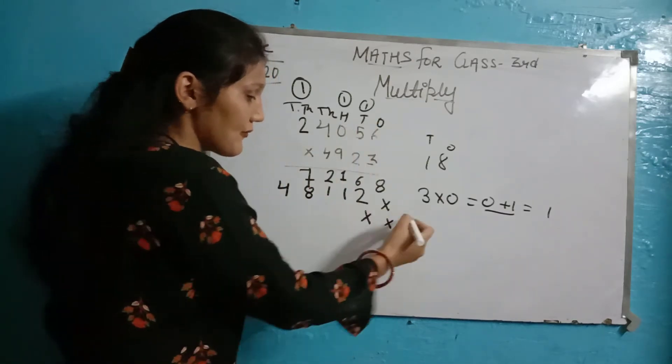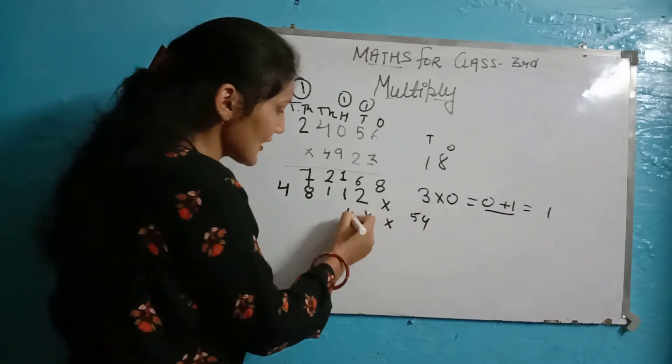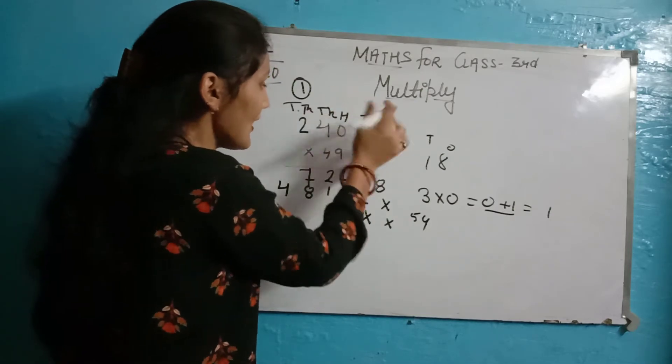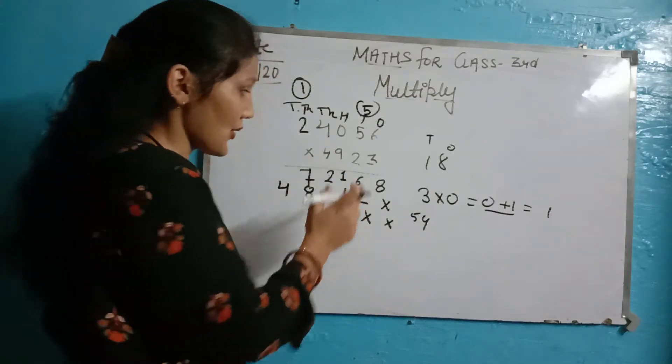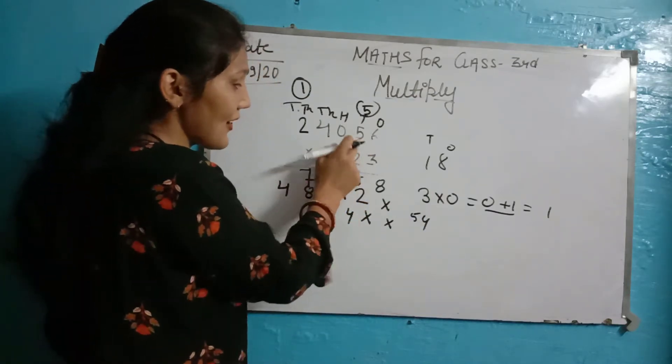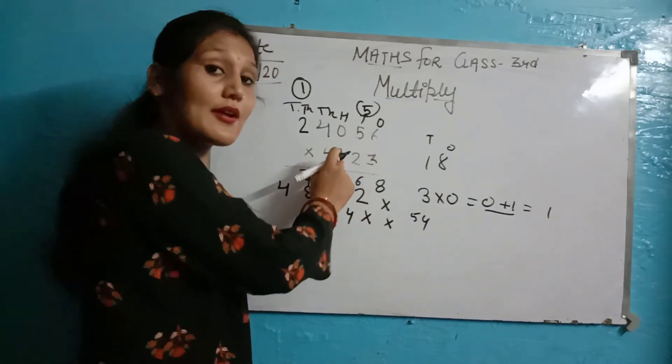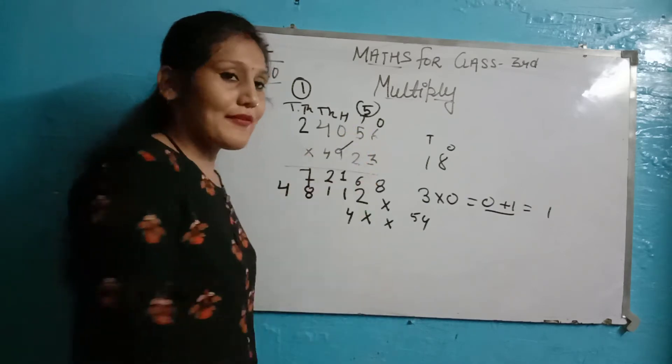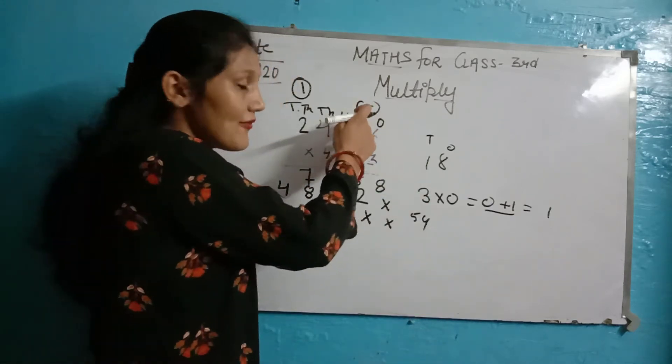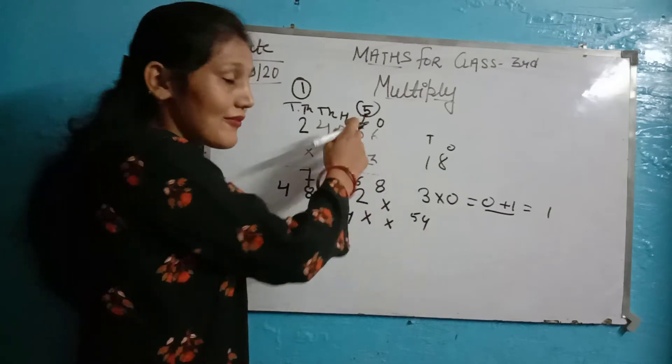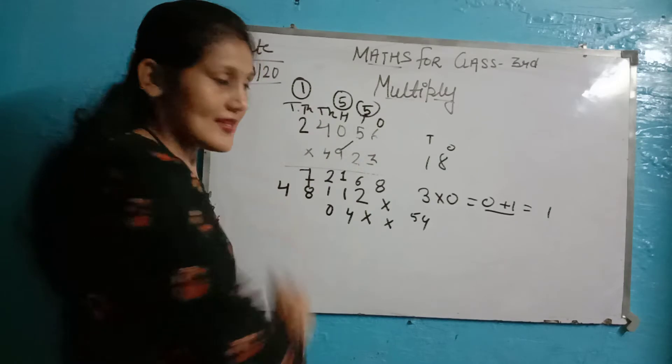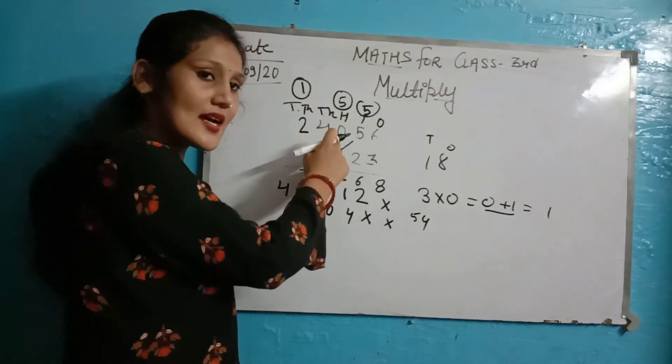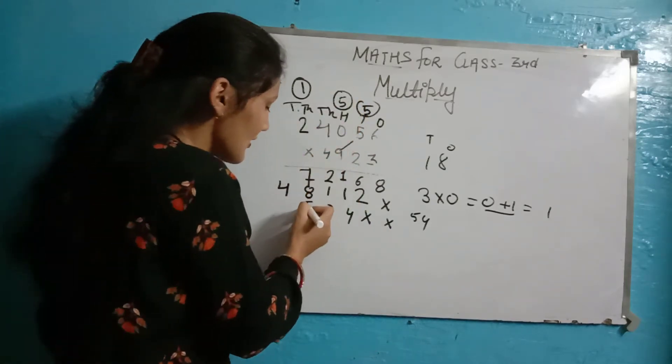We have 9 in hundreds place. Nine times six equals 54. Five carry. You write it separately so you don't get confused. Now, nine times five equals 45. Plus 5 is 50. So we have 5 here. Here 9 times 0 equals 0, 0 plus 5 equals 5.